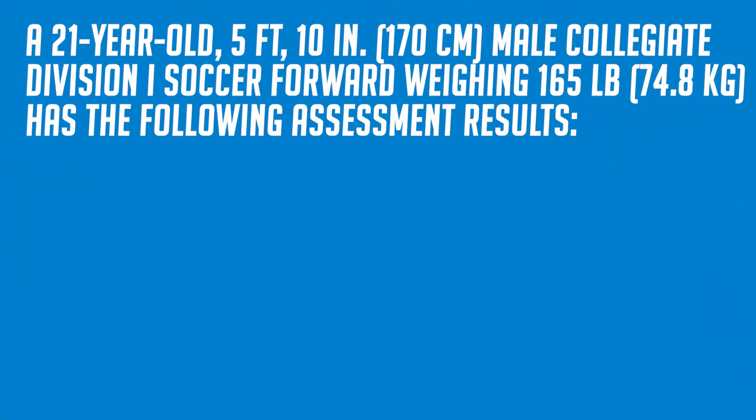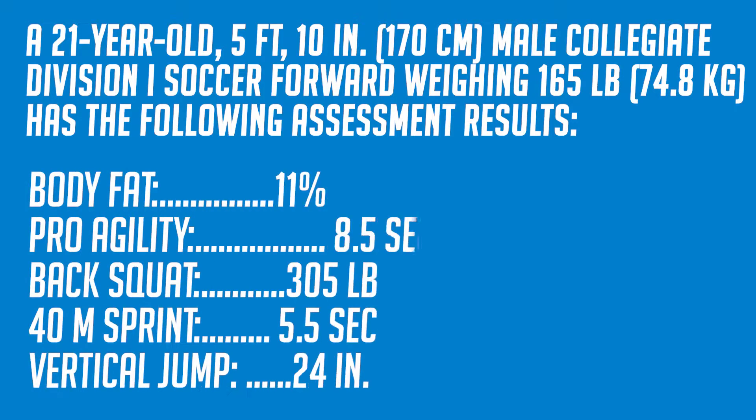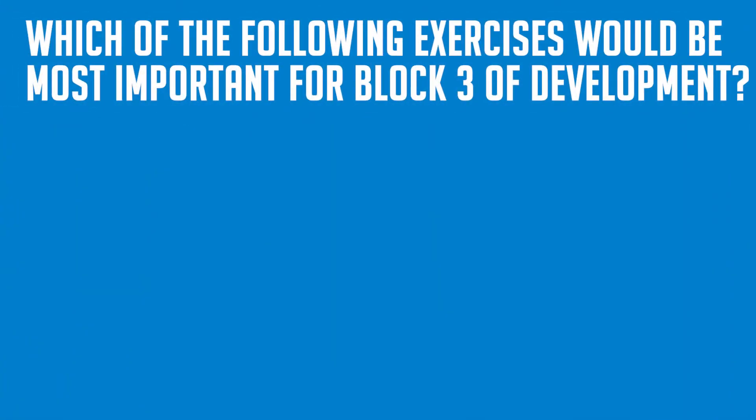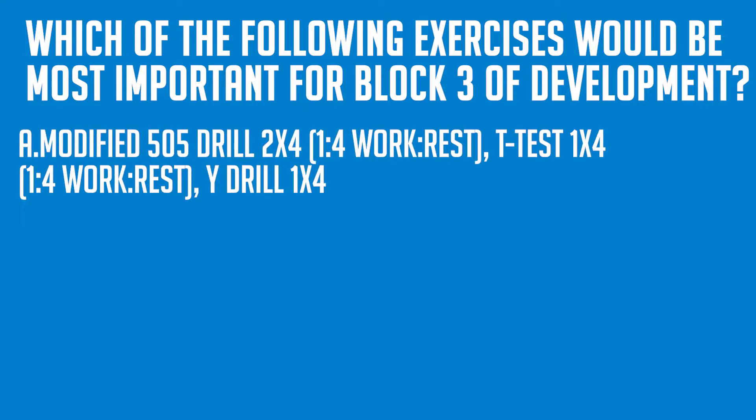A 21 year old 5 foot 10 male collegiate Division 1 soccer player weighing 165 pounds has the following assessment results: body fat percentage of 11%, a pro agility time of 8.5 seconds, a back squat of 305 pounds, a 40 meter sprint in 5.5 seconds, and a vertical jump of 24 inches. Which of the following exercises would be most important for block 3 of development?